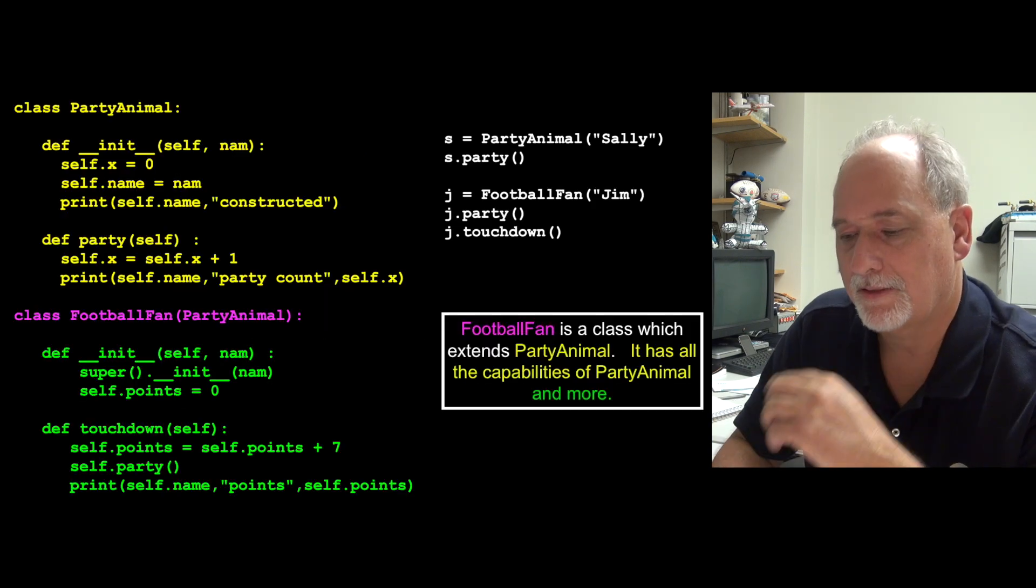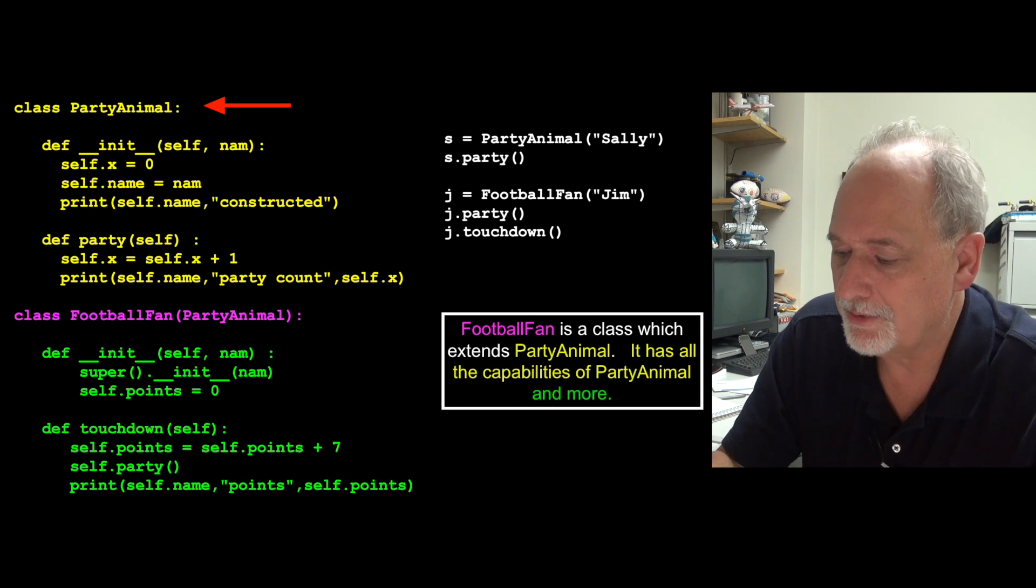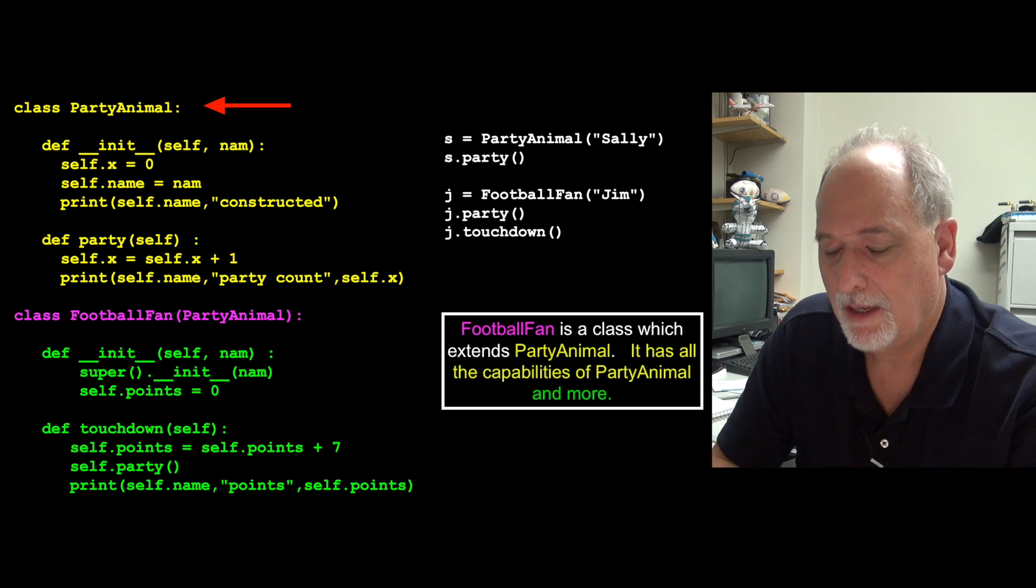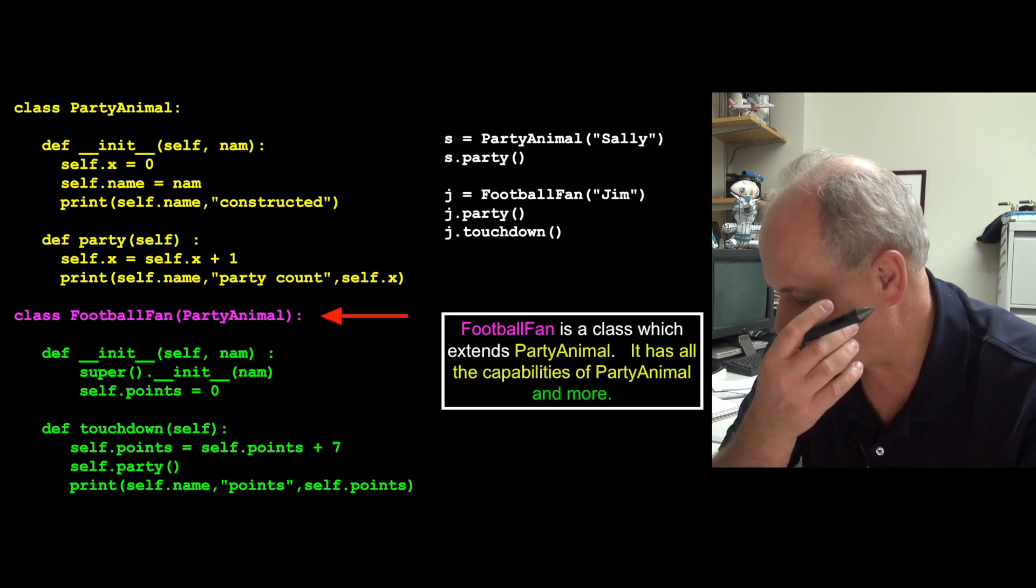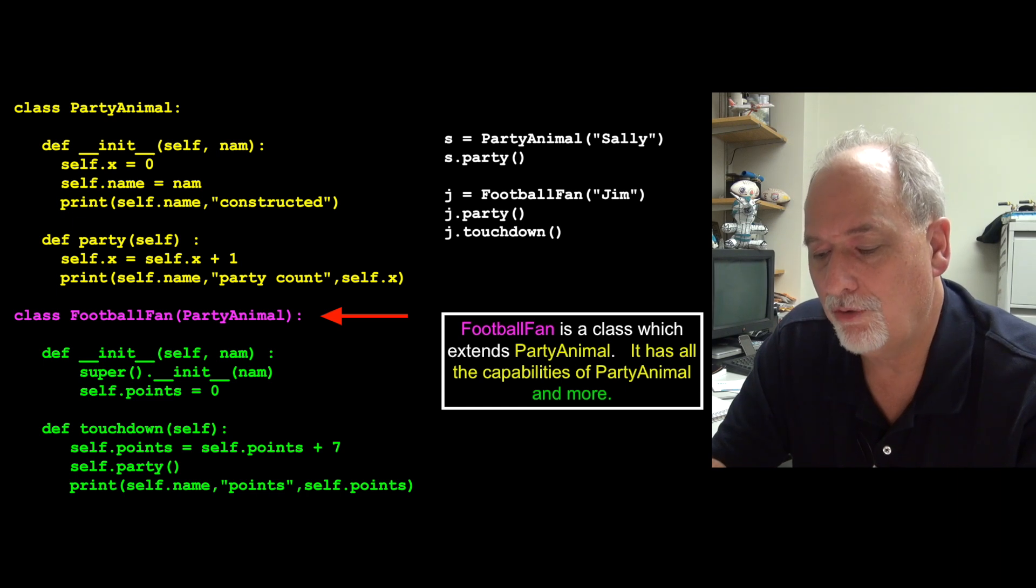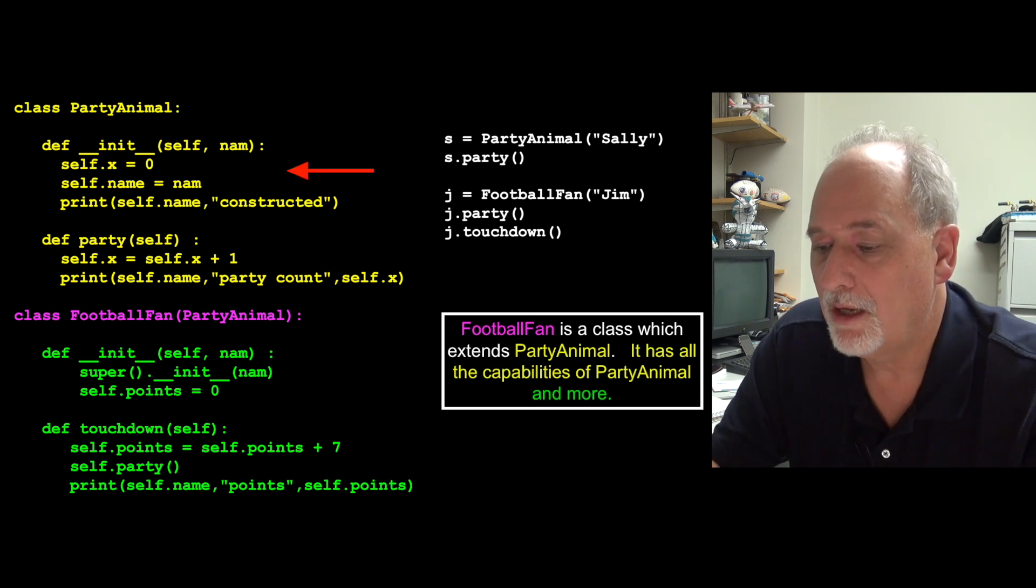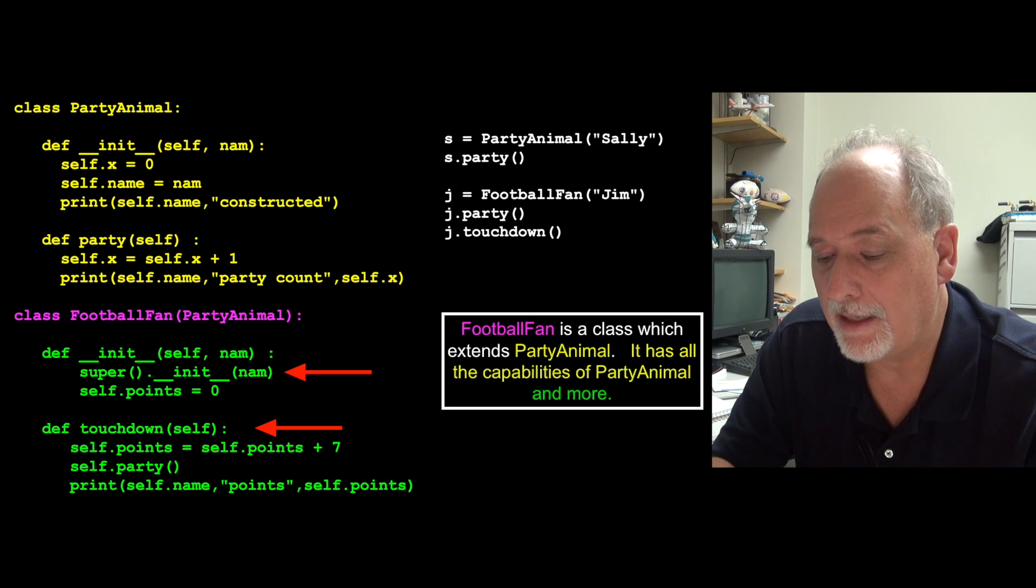So here's a bit of code. Let's take a look at this. This code's unchanged. It's the PartyAnimal code that we've been saying all along. It's the one that we construct and put a name in. And now what we're going to do is extend it. And so you'll notice that this code down here is the part that's doing the extending. So we're making a new class, FootballFan, and by putting in parentheses before the colon, PartyAnimal, that says FootballFan inherits everything that is PartyAnimal.